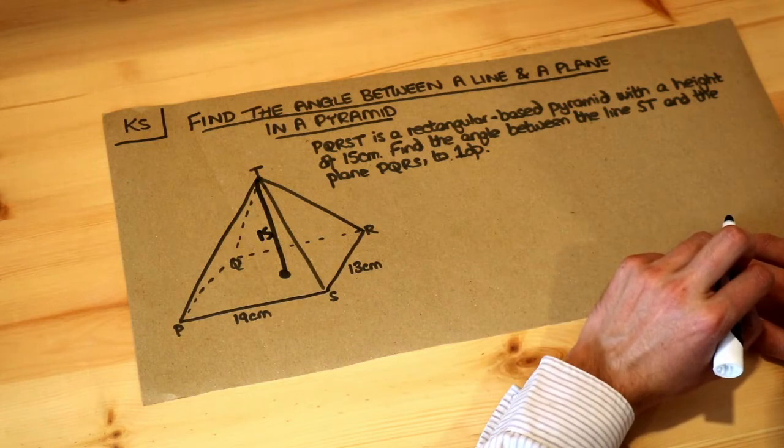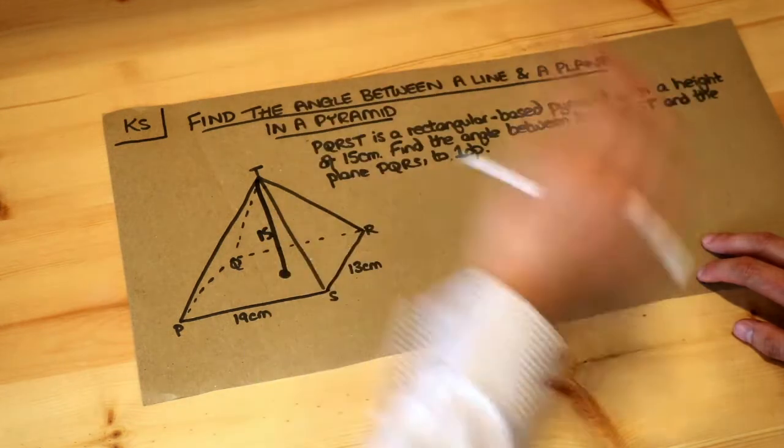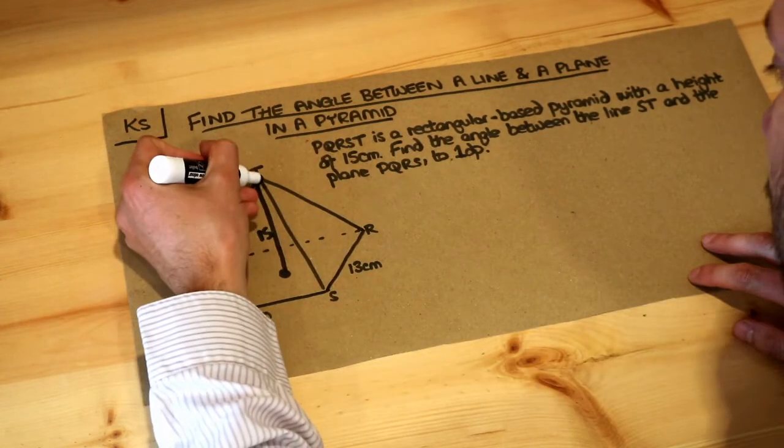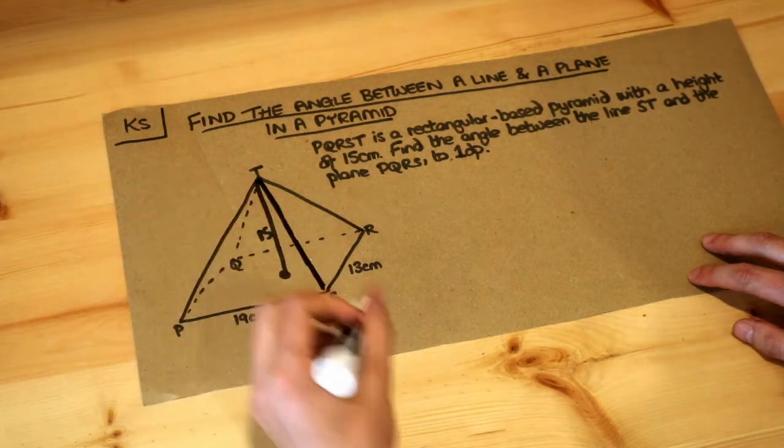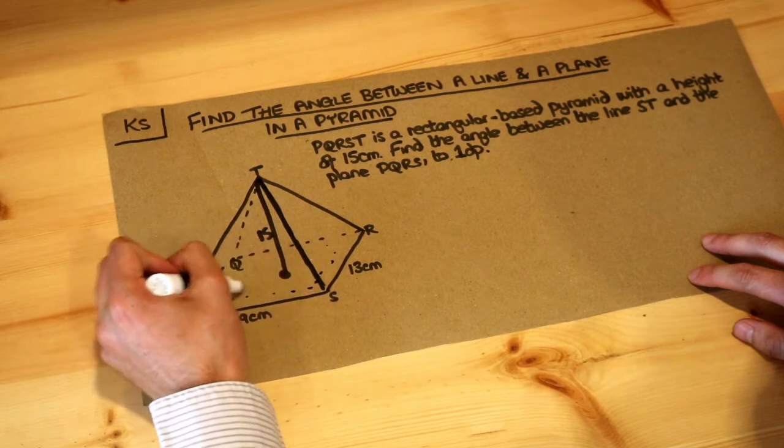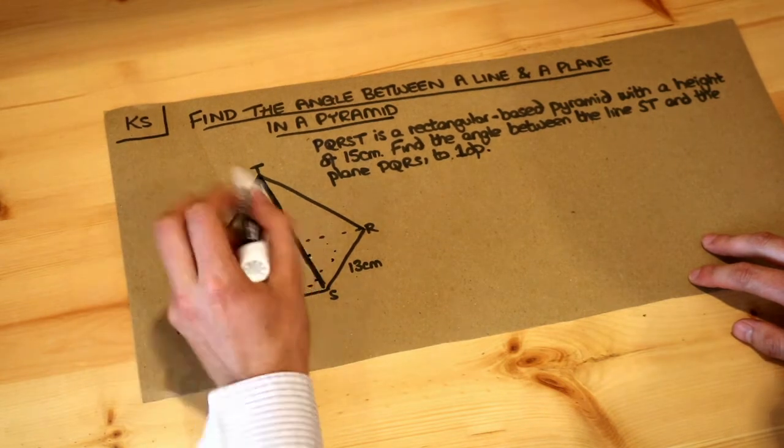Find the angle between the line ST and the plane PQRS. Now remember plane is just a flat surface. So we want to find the angle between the line ST, which is this, that's ST, and the plane PQRS, which is the bottom. So this is the bottom PQRS, this flat surface here.